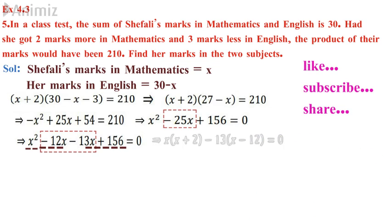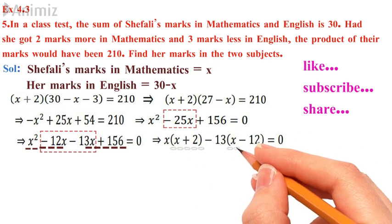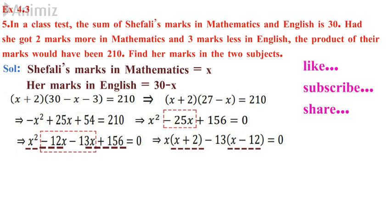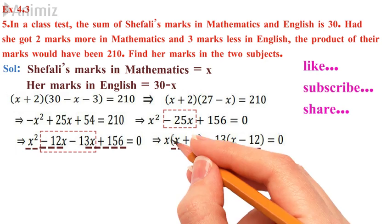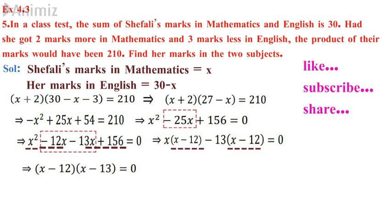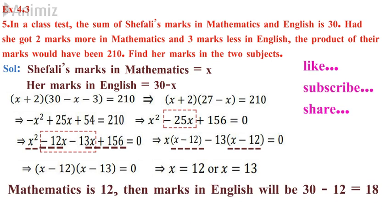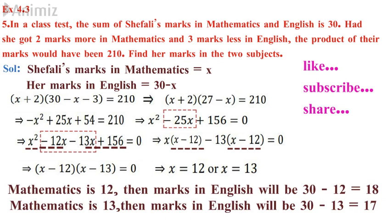Now when I see this equation I have x minus 12 in common. So I go for taking x minus 12 in common where I get the equation as x minus 12 into x minus 13 is equal to 0. So I will be having my x as 12 or x is equal to 13. So when my math mark is 12, English mark is 30 minus 12 is equal to 18. When the math mark is 13, the English mark is 30 minus 13, that is 17.